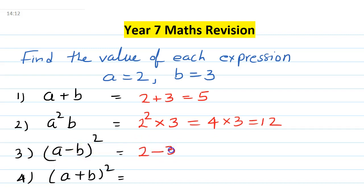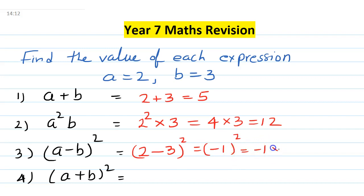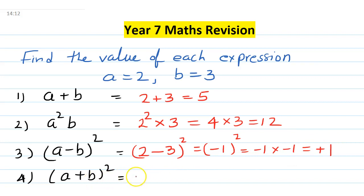Now (a minus b) whole square: that is (2 minus 3) whole square. 2 minus 3 is minus 1, so it is (minus 1) squared, which means minus 1 times minus 1. When you multiply minus and minus it turns into positive, and 1 times 1 is 1, so the answer is plus 1.